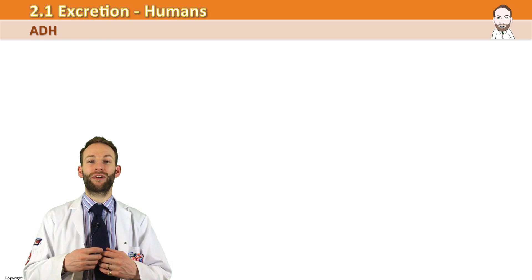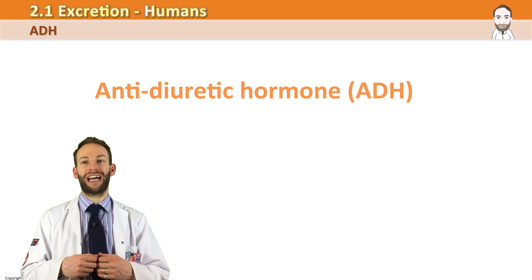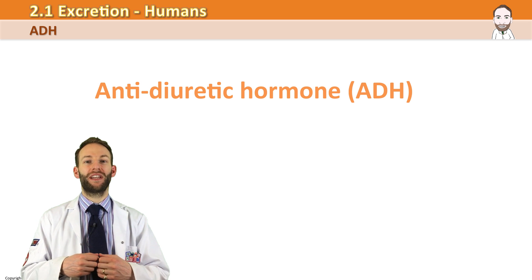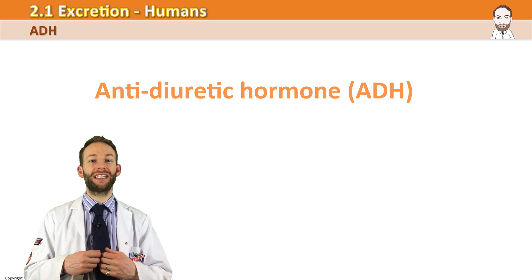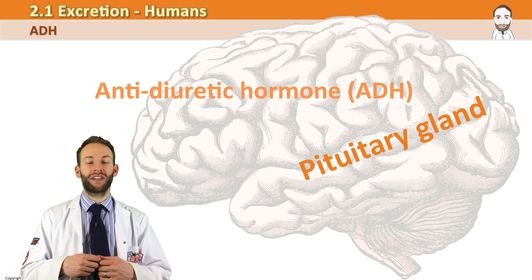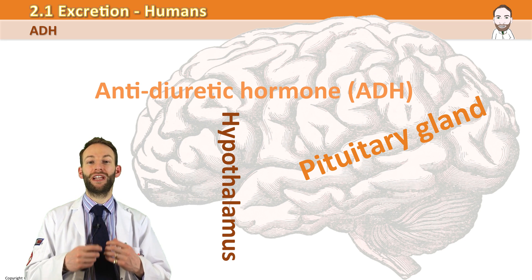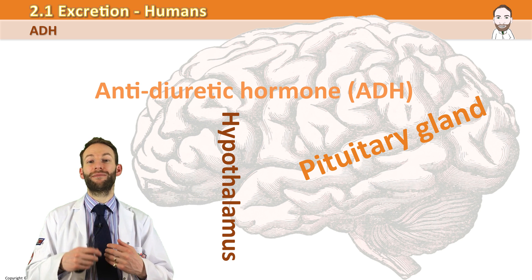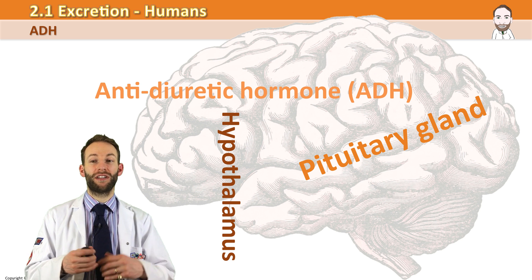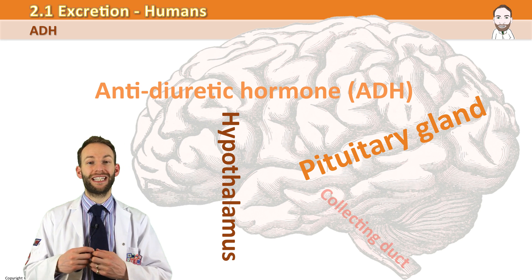The way that you control that process is by a hormone. The hormone is called ADH — anti-diuretic hormone. It is secreted by the pituitary gland in the brain. You've got special cells in the hypothalamus part of the brain that can detect the amount of water in the blood, and depending on how much water there is, you will then release a certain amount of anti-diuretic hormone.